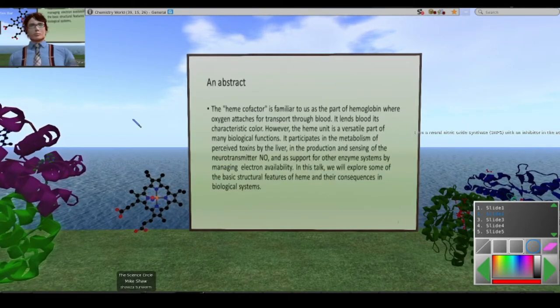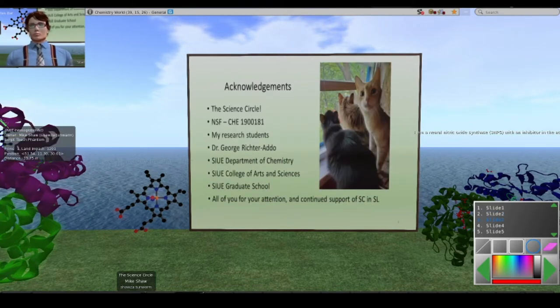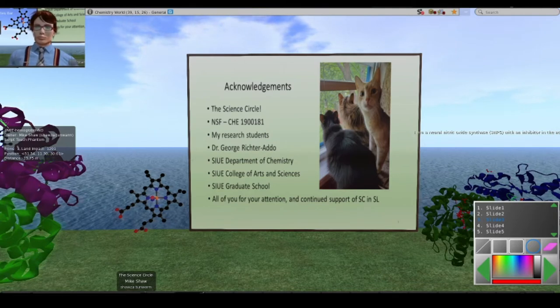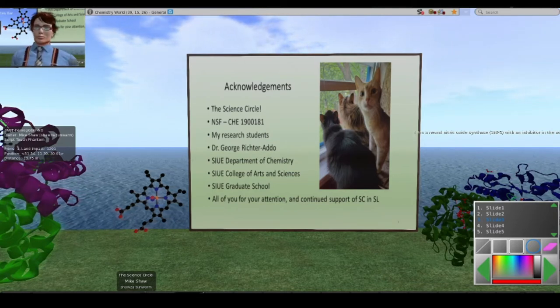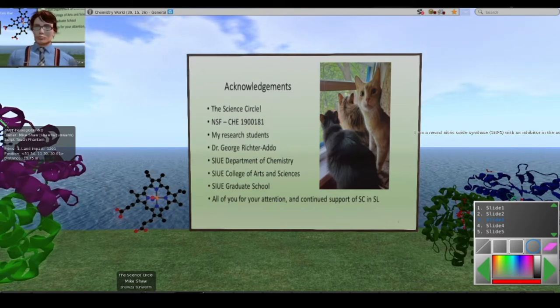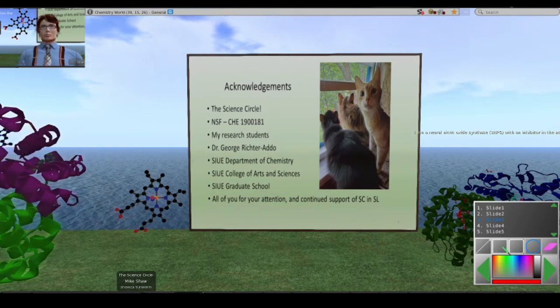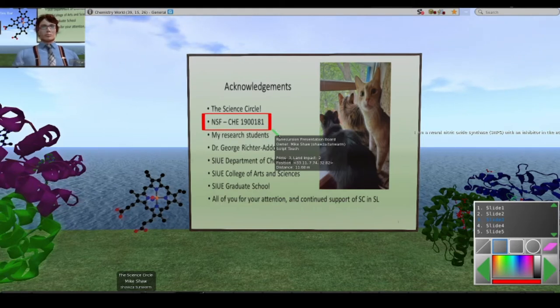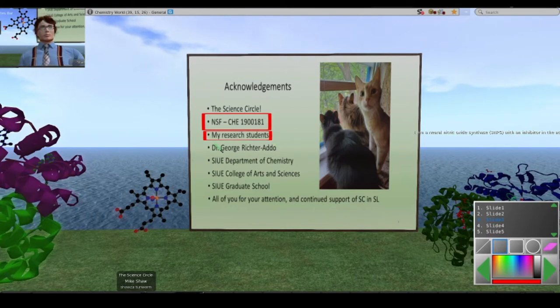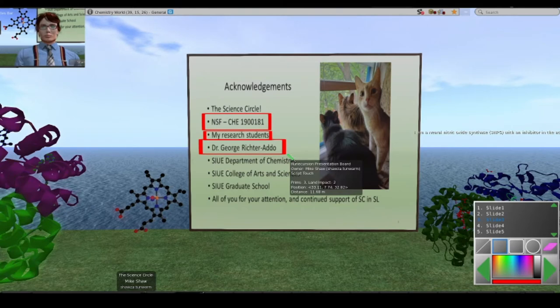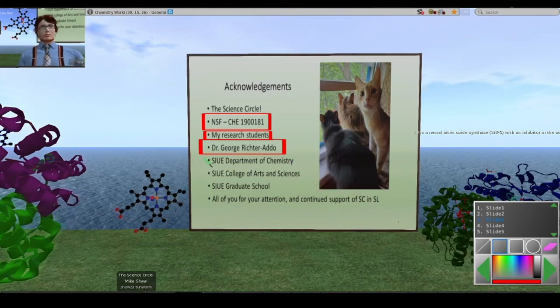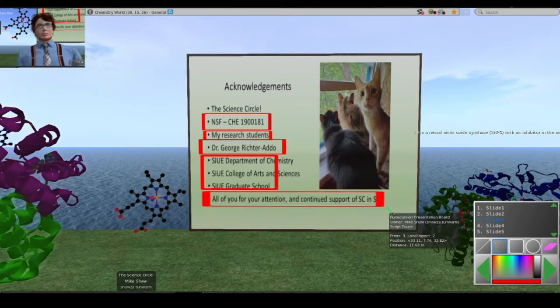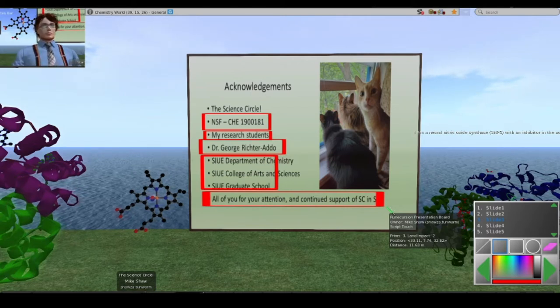I always include an abstract with my talks. The abstract is also in the PDF of the talk, which is available from the Science Circle website. I'd like to start with some acknowledgements. Science Circle has been supporting talks for many years now, over a decade, many of which are recorded and posted on YouTube. I'd particularly like to thank the National Science Foundation for support for my own research as well as part of that support for the Science Circle, my research students, and my good friend and collaborator Dr. George Richter-Addo, who is my collaborator on the NSF.